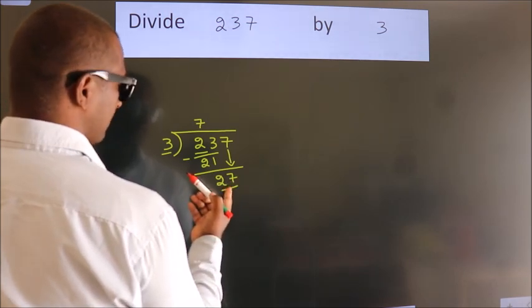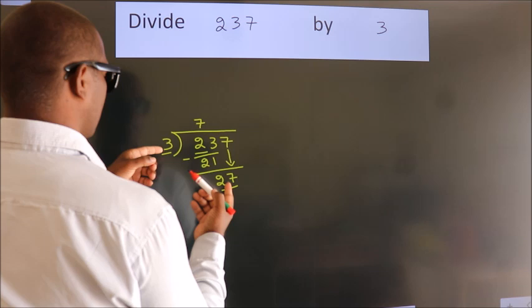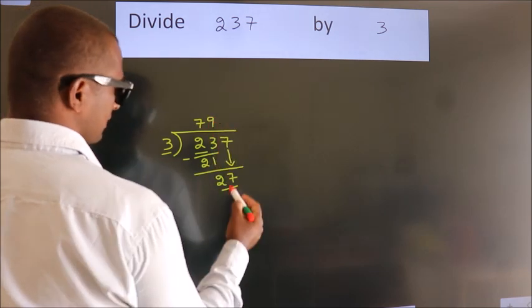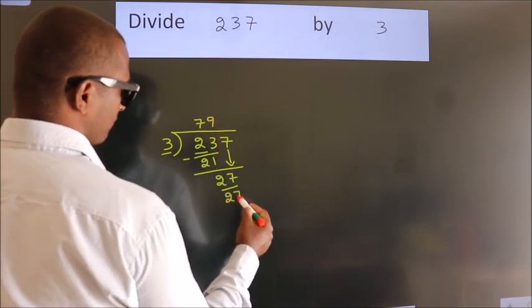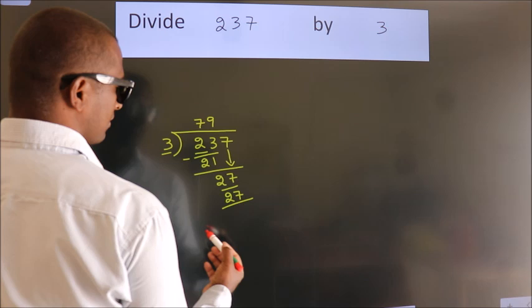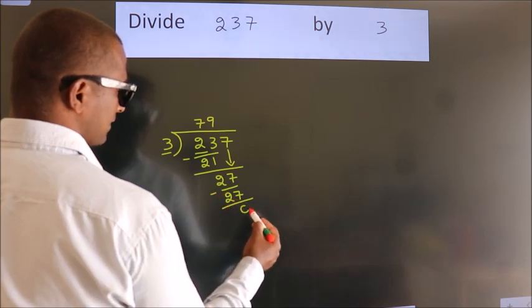When do we get 27? In 3 table, 3 times 9 is 27. Now we subtract. We get 0.